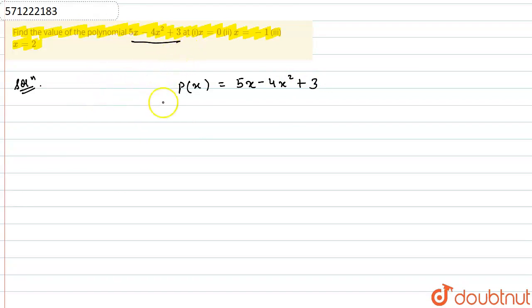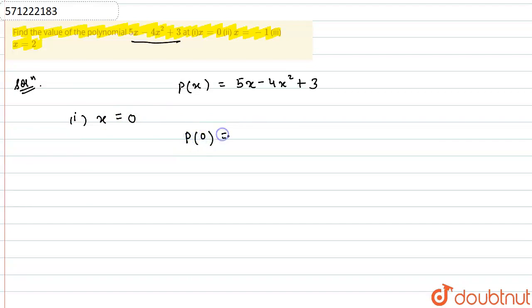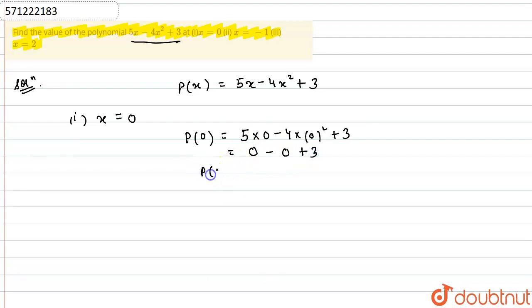First, at x equals zero. Always remember: whenever we need to find the value of the polynomial at any particular x, we simply put the value of x into the polynomial. So for p(0), we put zero in place of x: five times zero minus four times zero squared plus three, which gives zero minus zero plus three, so p(0) equals three.